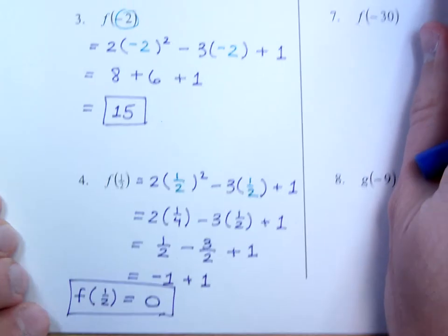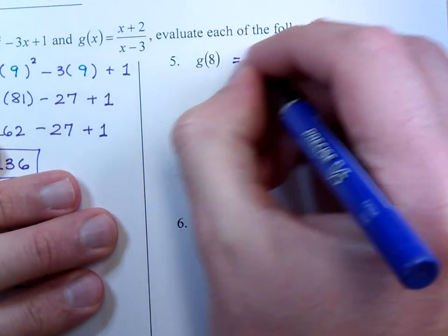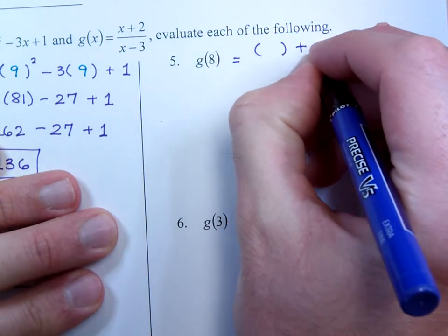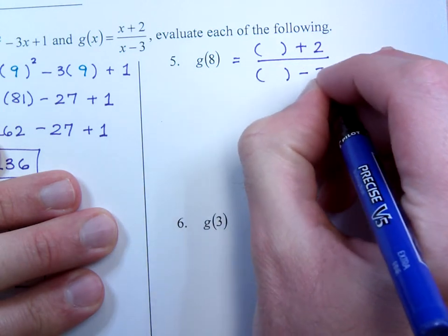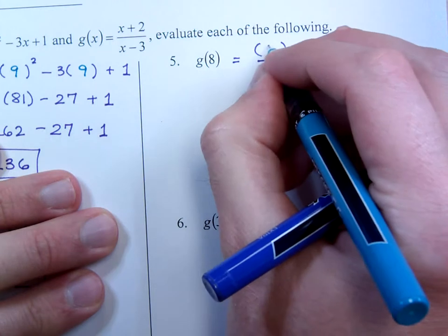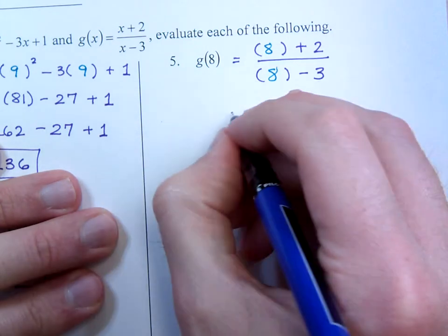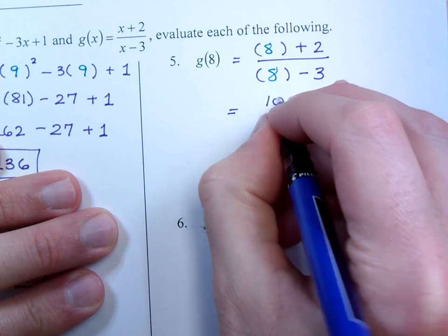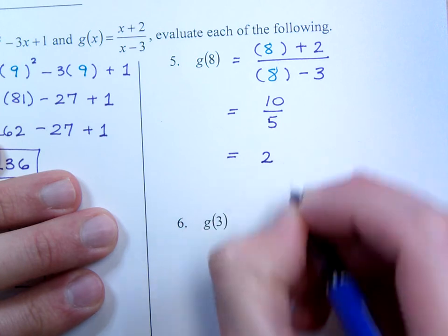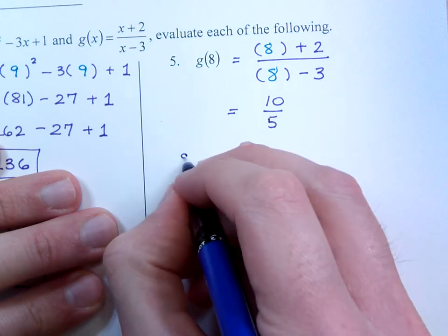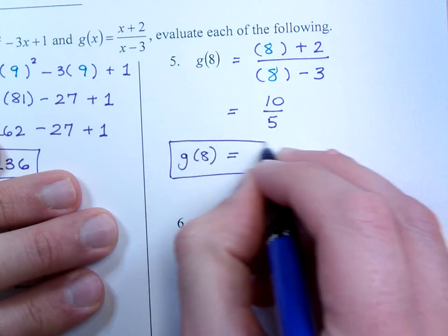Let's take care of the rest of these. Number 5, g of 8. So rewrite the problem so that you have parenthesis instead of the x's. My input value here is 8, so I plug in the 8. 8 plus 2 is 10, 8 minus 3 is 5. And when I finish simplifying this is just 2. So g of 8 is equal to 2.